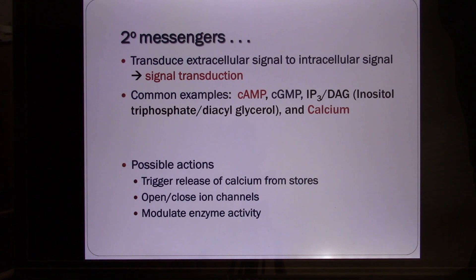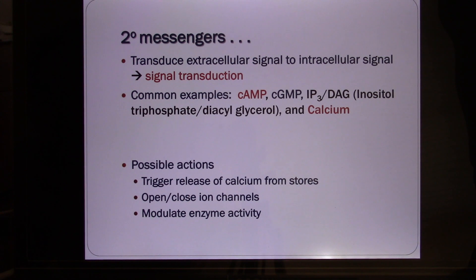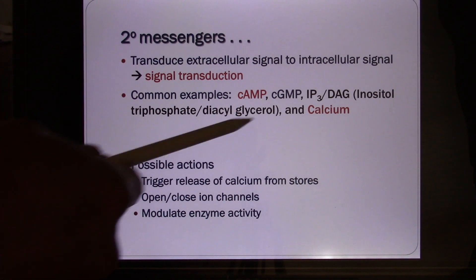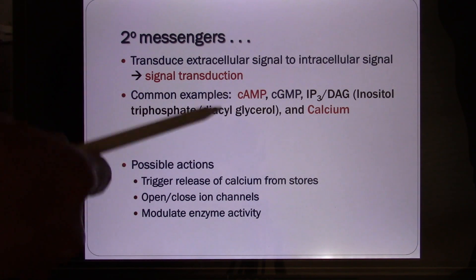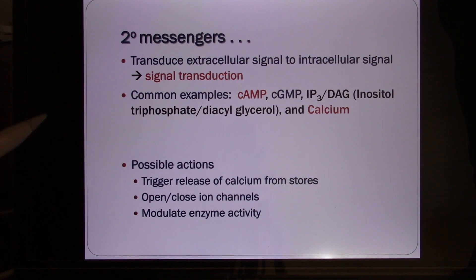When you see cyclic AMP, you need to think back: the ligand — this chemical molecule — must be a lipophobic molecule. It will bind with a membrane receptor, and this membrane receptor is the G-protein coupled receptor. This G-protein coupled receptor activates cyclic AMP, and cyclic AMP will go to activate other proteins inside the cell, like protein kinase A. That's your thinking logic.